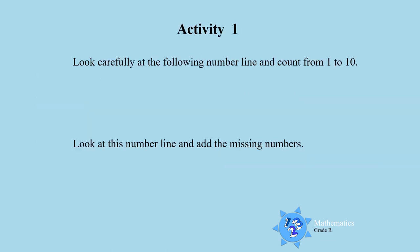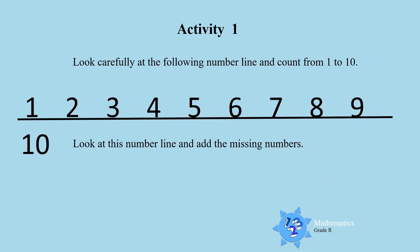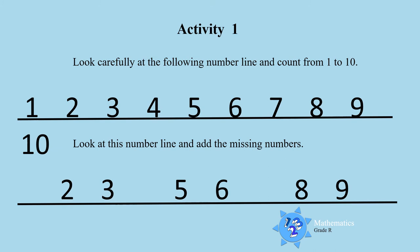Activity 1. Look carefully at the following number line and count from 1 to 10. Then you look at this number line and look at the numbers that are missing. There are some numbers missing boys and girls. You must add the missing numbers.